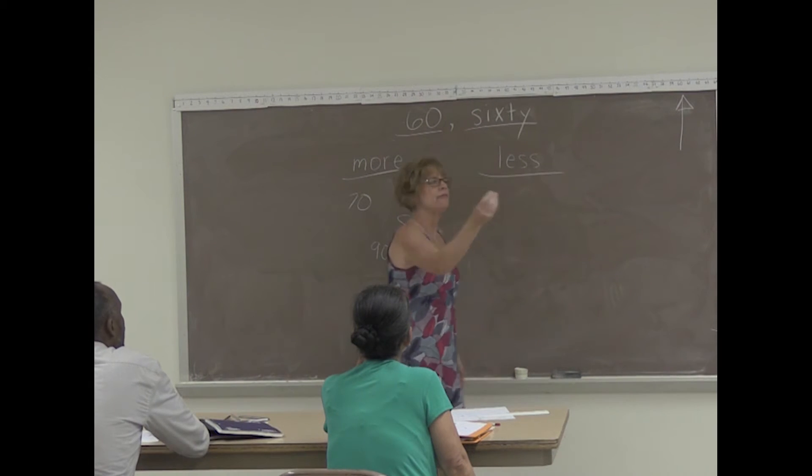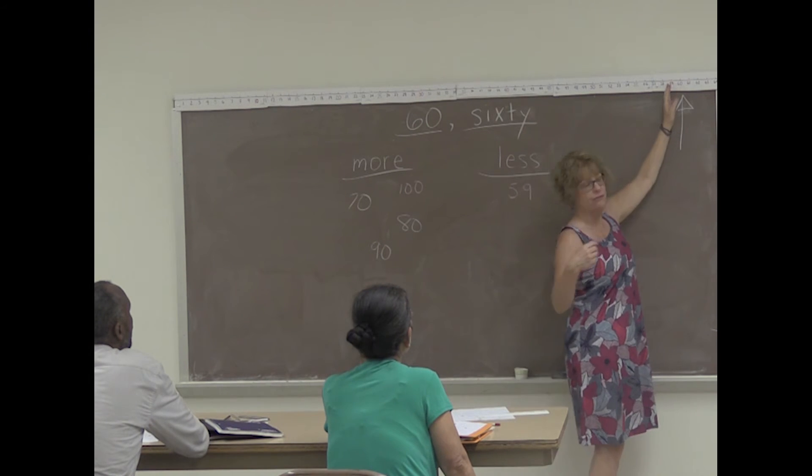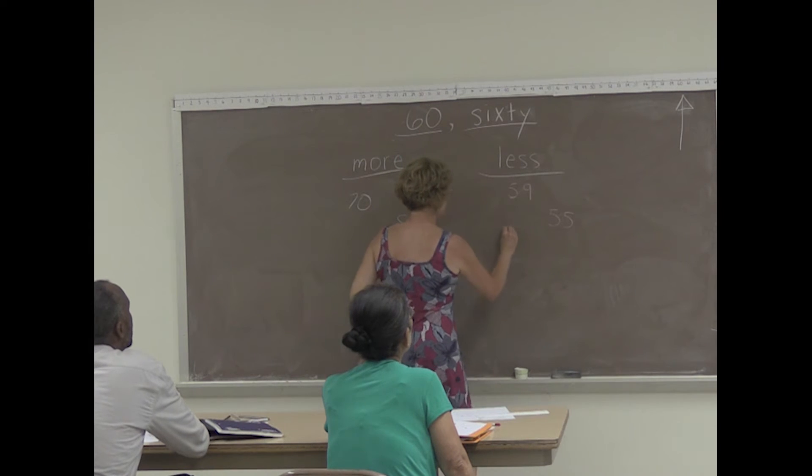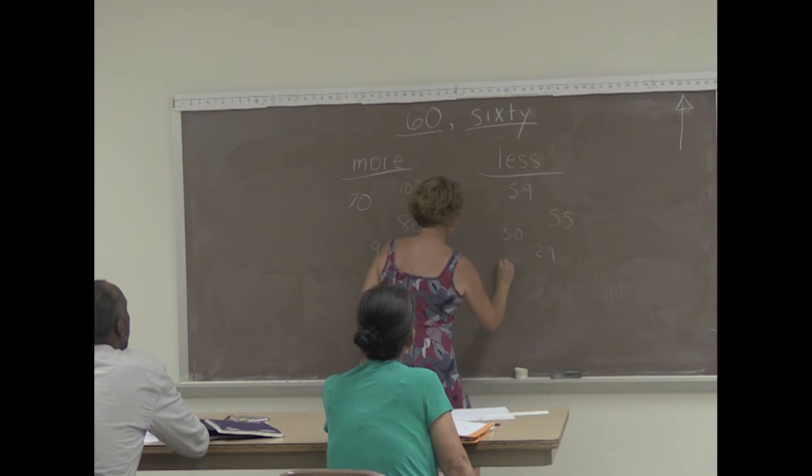What numbers are less than 60? 59. 30. 29. 39. Good.